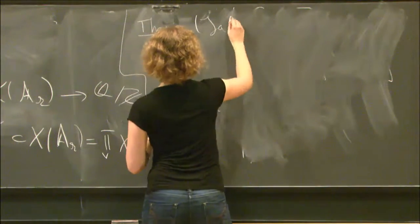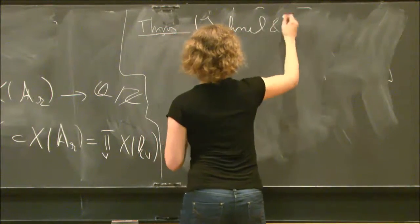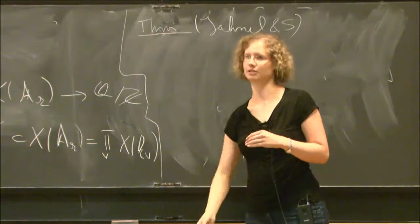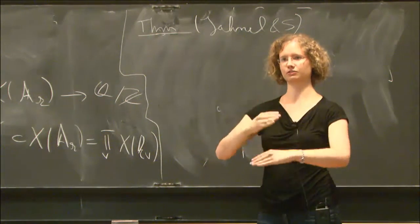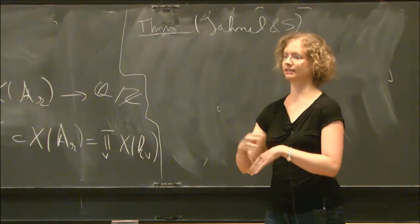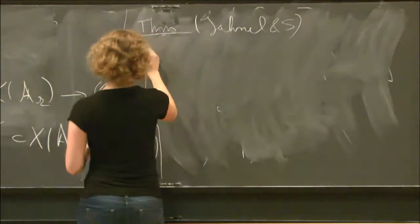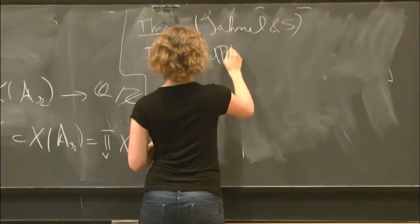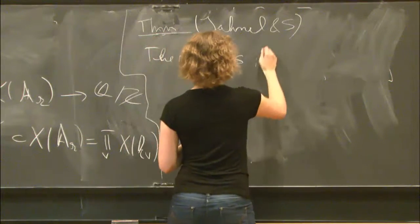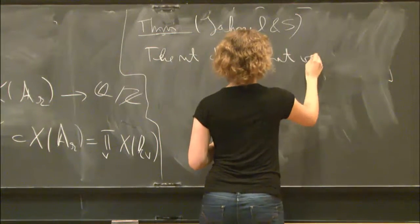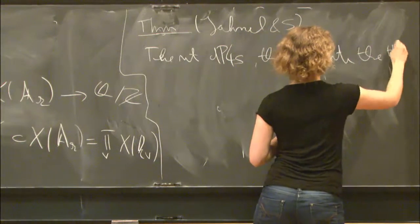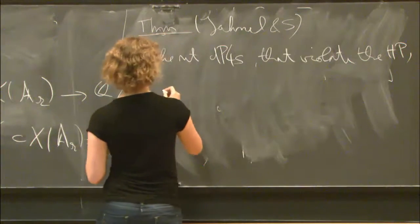With a collaborator of mine, Jörg Jahnel, we showed that for the case of the Châtelet surface of the P4, so the intersection of two quadrics in P4, these examples are everywhere. More precisely, the set of the Châtelet surfaces of the P4 that violate the Hasse principle, that's Zariski-dense in the moduli scheme.